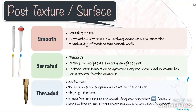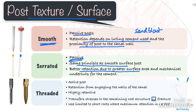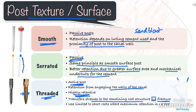Coming to post surface or post texture, these factors can have a profound influence on post retention and stress distribution. There are three types: smooth posts, which are passive and rely on the luting cement and proximity to the dentinal wall for retention — sandblasting their surface can increase retention. Serrated posts are also passive but provide greater retention due to increased surface area and mechanical undercuts for luting cements. Threaded posts are active posts where retention comes from threads engaging the canal walls. Although highly retentive, they transfer tremendous stresses to the remaining tooth structure, increasing the possibility of vertical root fracture, and should only be used in cases with substantial remaining dentine or short roots where maximum retention is needed.